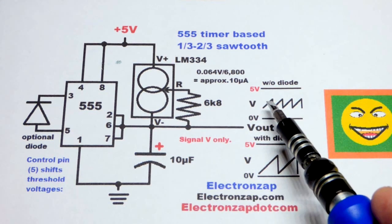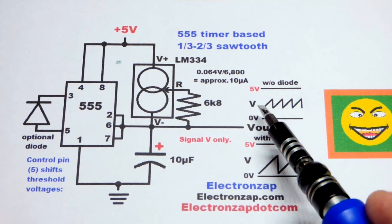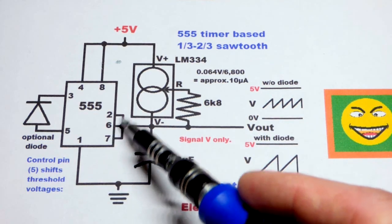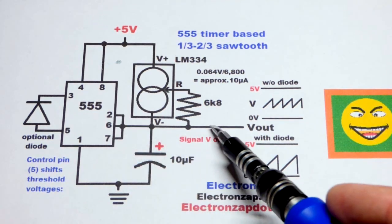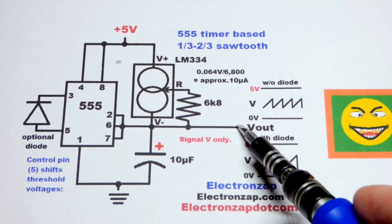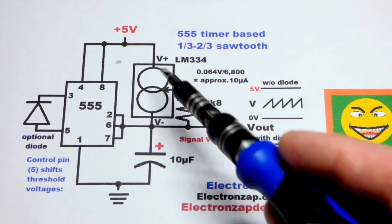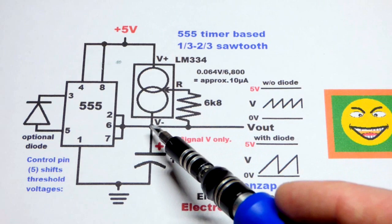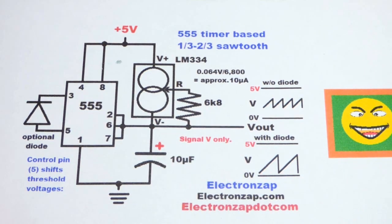To get our sawtooth, we need a steady current while it's charging. These pins will not let any current through. Whatever we attach to the output cannot take any current either. What's going to provide the current is this LM334 current source component.